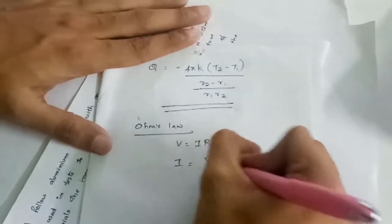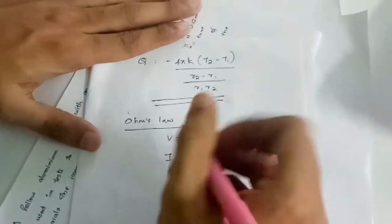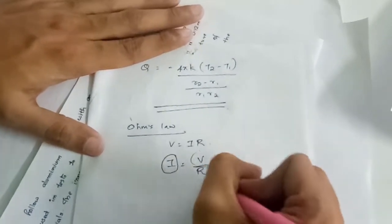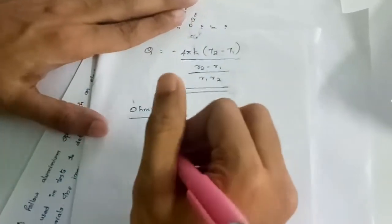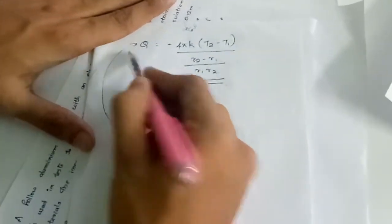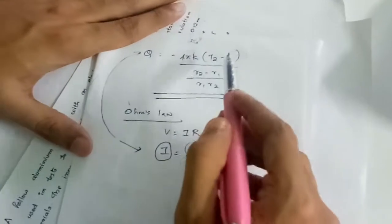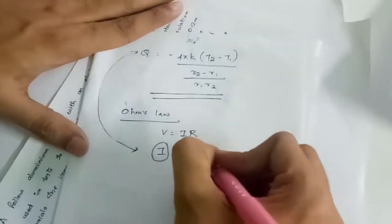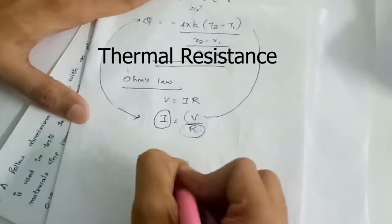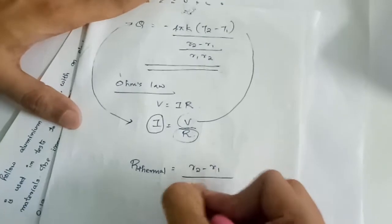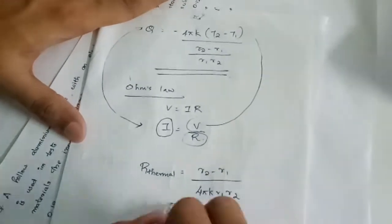Using the electrical analogy where i = V/R: for a current i flowing under a potential difference V, a resistance R is required. Comparing heat transfer to electrical analogy: Q corresponds to current, and (T2 - T1) is the temperature gradient (analogous to potential difference V). Therefore, the thermal resistance is R_thermal = (R2 - R1) / (4πk·R1·R2).